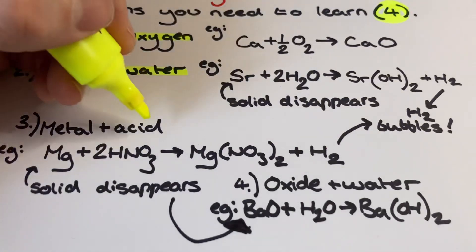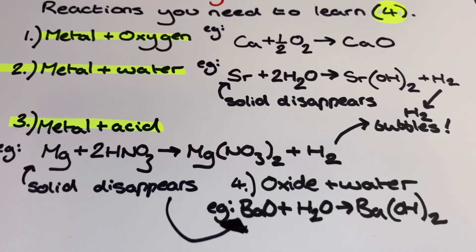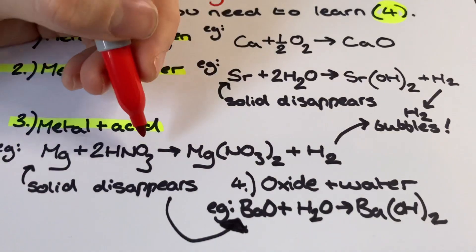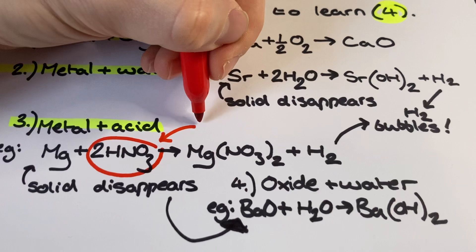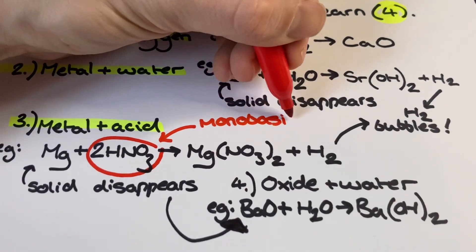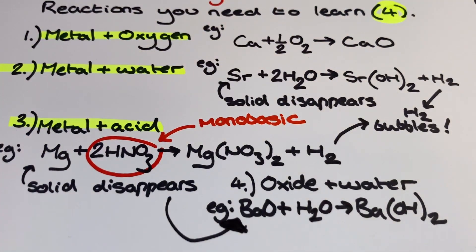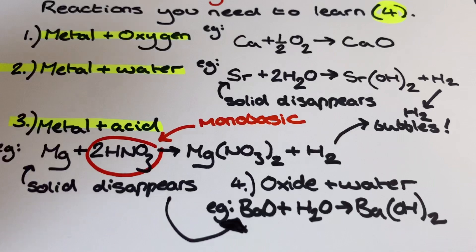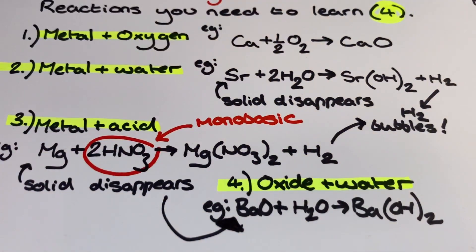The third reaction is the metal and acid, and here I've decided to use a monobasic acid. It's dilute acids only for this according to your specification. One mole of the metal using a monobasic acid is going to react in a 1 to 2 ratio with the acid to produce one mole of salt and some hydrogen gas bubbles once again. We would also notice the solid metal disappear.